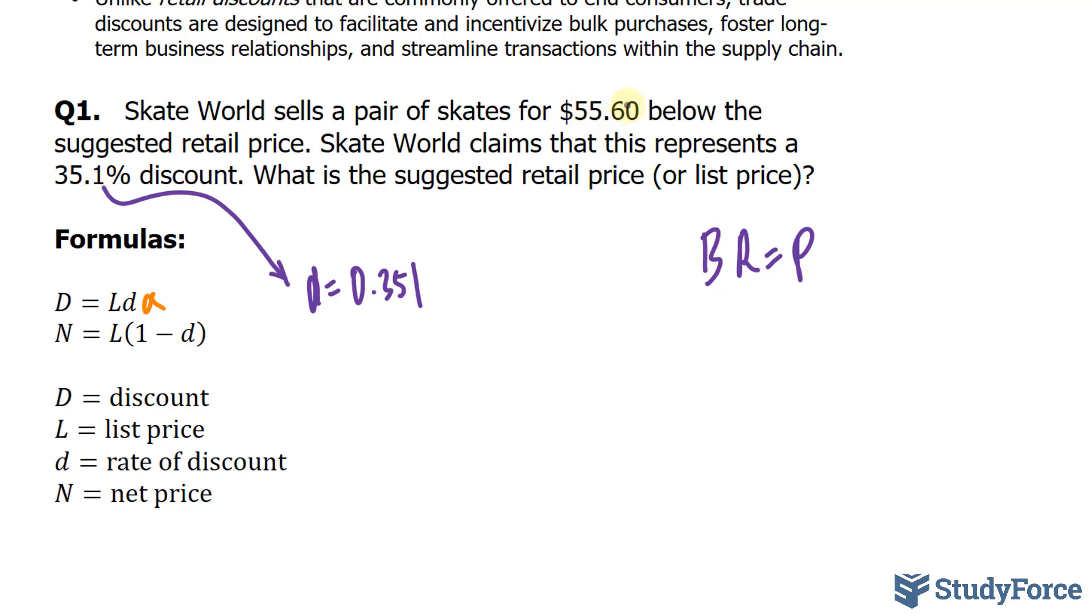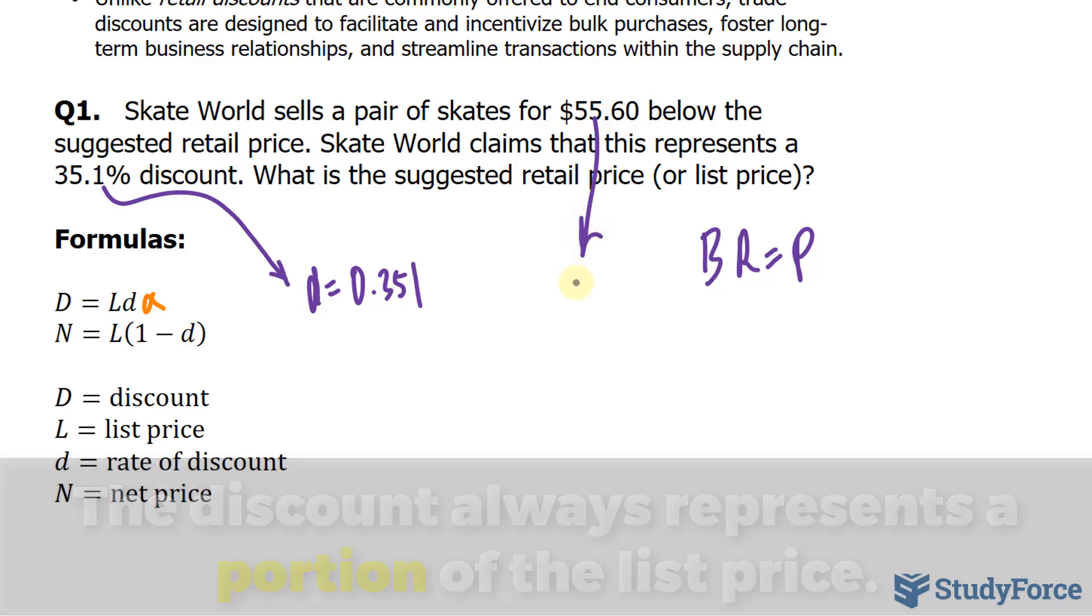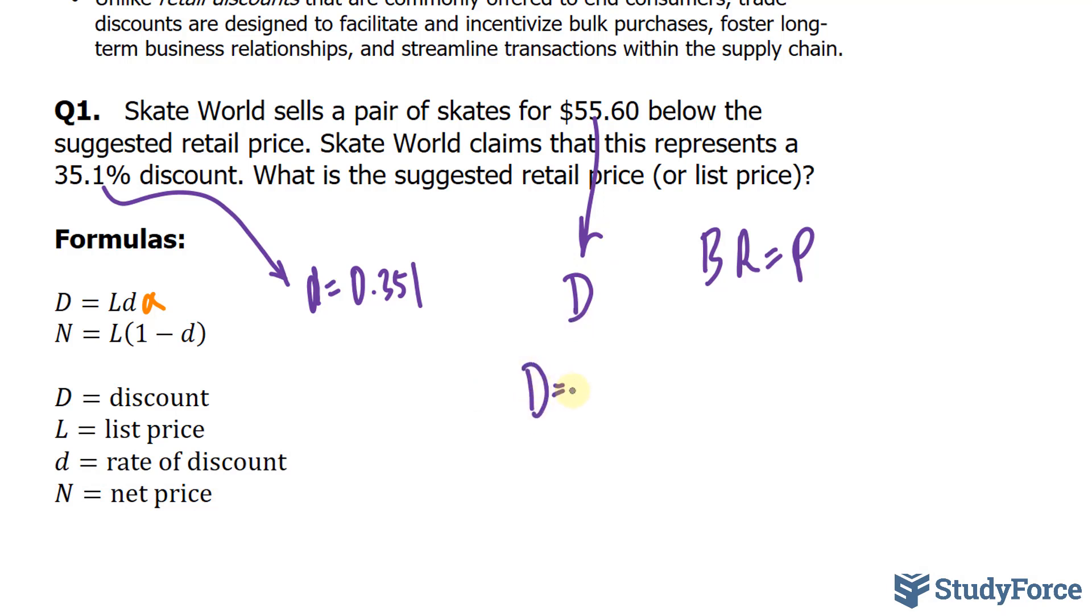So, this value right here represents the discount, capital D. And if we substitute these values into the formula, D is equal to Ld, we can isolate for the list price. So, substituting 55.60 into the formula, L remains unchanged, and d is equal to 0.351.